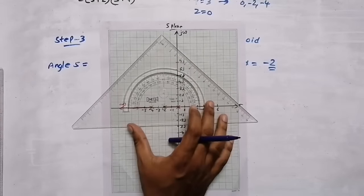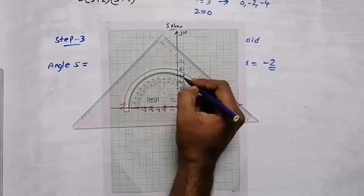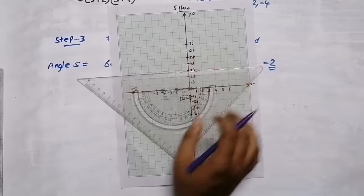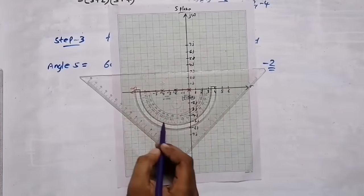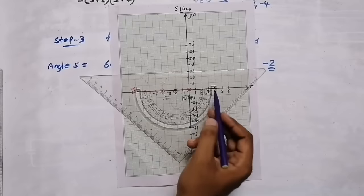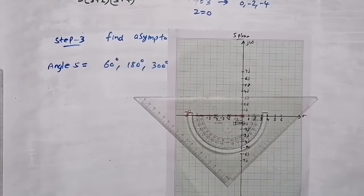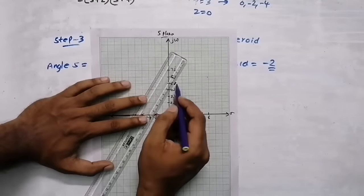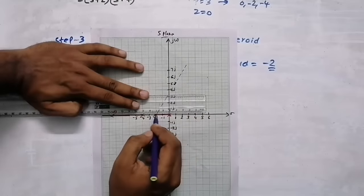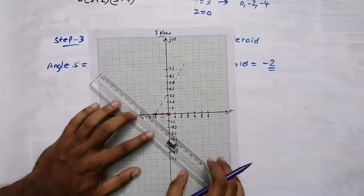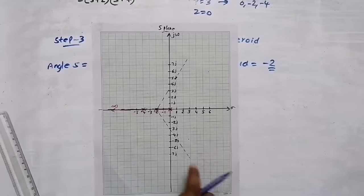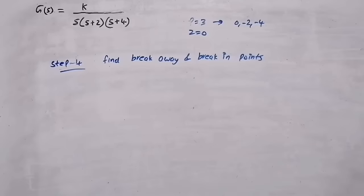From the point at -2, set the center and plot 60°, then 180°, then 300° (which is equivalent to -60°). Asymptotes must always be drawn with dotted lines — they are just straight lines. Use a scale and draw dotted lines from the centroid at these three angles: 60°, 180°, and 300°.